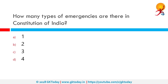How many types of emergencies are there in the Constitution of India? There are three types of emergencies defined in the Constitution of India: national emergency, state emergency and financial emergency. They are mentioned in Part 18 of the Indian Constitution, which deals with emergency provisions.